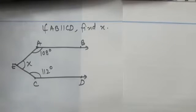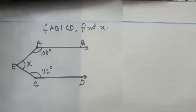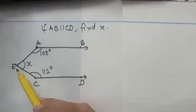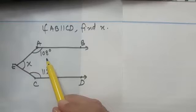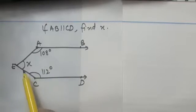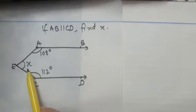Let us now discuss another interesting question, the kind often asked in examinations. It says AB is parallel to CD and we need to find the value of x. In the figure, angle EAB is 108 degrees and angle ECD is 112 degrees, and we need to find the value of x.